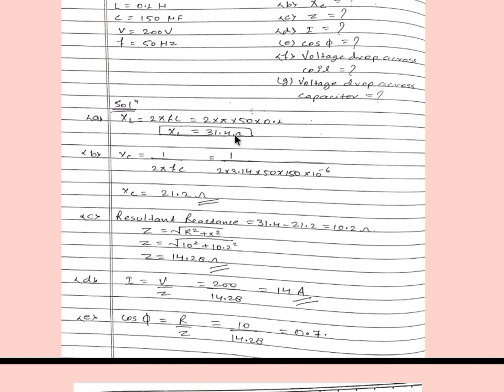Similarly, XC is equal to 1 divided by 2 pi f C. Putting in the values of C, F, and pi, our answer will be XC equal to 21.2 ohm.